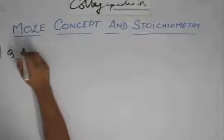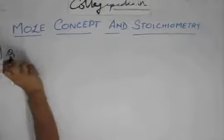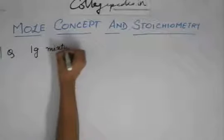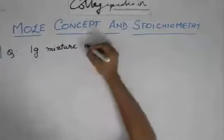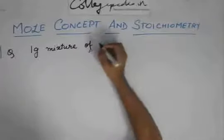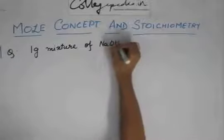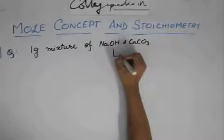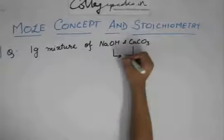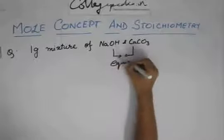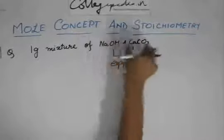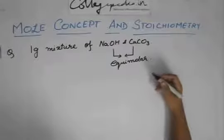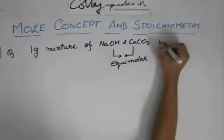The question is: you have a one gram mixture. The total weight of the mixture is one gram of NaOH and CaCO3, and both are equimolar. Equimolar means both compounds have the same number of moles in the mixture. You have to find the weight of oxygen.